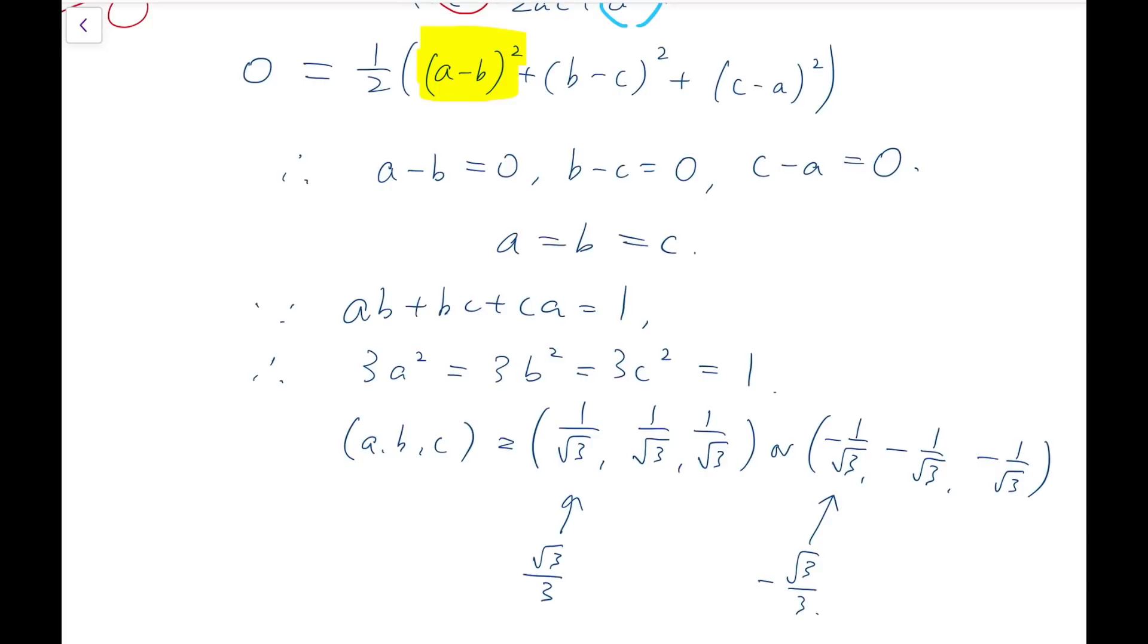So combining with the 1, 1, 0 and -1, -1, 0 and permutations, we have all our solution sets, totaling 8.